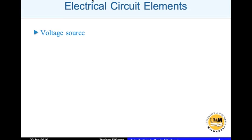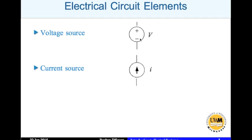Let's look at electrical circuit elements. You can have a voltage source, denoted by this symbol here — there's a plus and minus, which indicates this is a DC voltage source that gives the potential. You can also have a current source, which gives current as opposed to voltage. The arrow here indicates the direction of the current; an arrow implies this is a DC current source.